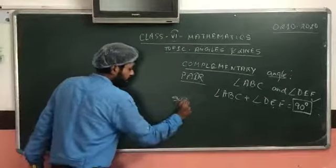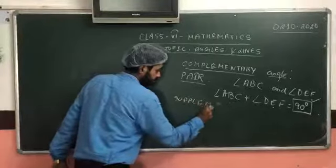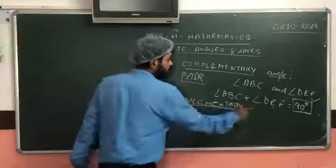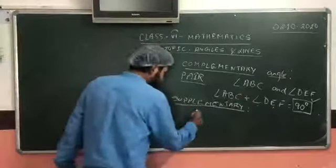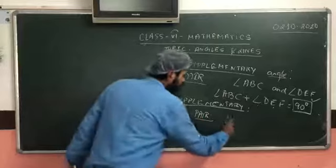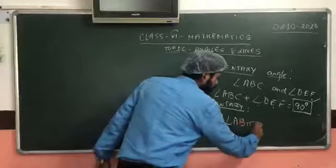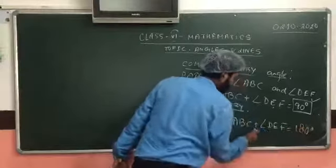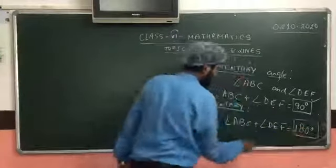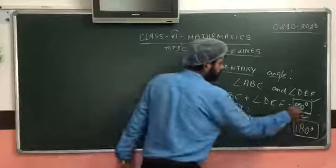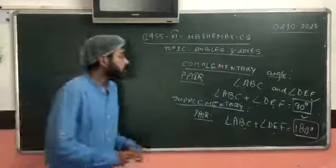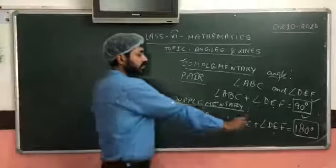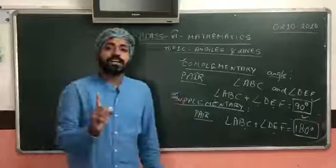Similarly, we have supplementary angles. What are supplementary angles? It is a pair of angles such that those two angles add up to 180 degrees. In that case, these two angles as a pair will be called supplementary angles. So when two angles add up to 90 degrees they are complementary, and when two angles add up to 180 degrees they are supplementary.